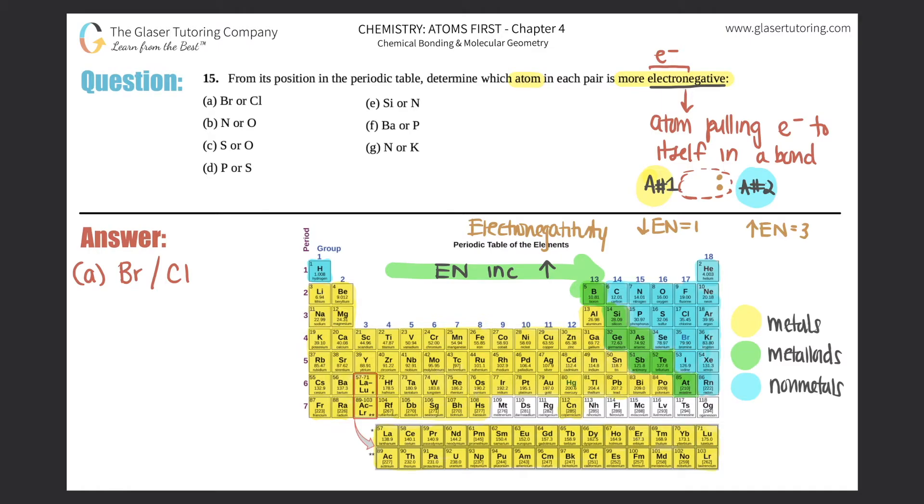Now, as you go down a group, same thing with ionization energy. Ionization energy decreased, electronegativity decreases. So lithium would have a much higher electronegativity. It would want to pull electrons more towards itself than cesium. So now we just got to do the questions. So between bromine and iodine, which one has the higher electronegativity? It would be bromine because as you go down a group, electronegativity decreases. So bromine would have a higher electronegativity.